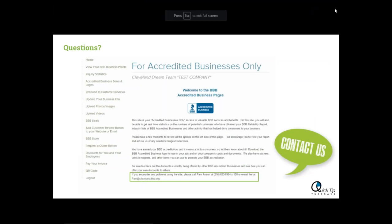Are there any questions today? If you have any questions, you can type those into the box. If there are no questions, you can find my contact information at the bottom of the business profile login page. My phone number is 216-623-8964 extension 108, or you can email me at pam@cleveland.bbb.org. I'll be happy to send you step-by-step directions on any questions you have about your business profile or business login, whether it's setting up photos or videos or any other questions. Thank you so much for attending our webinar today, and we hope to see you in a few weeks for another Quick Tip Tuesday. Thank you and have a great day.